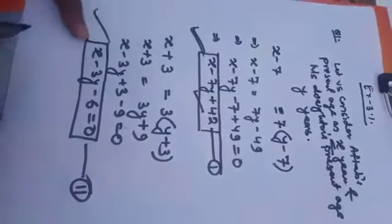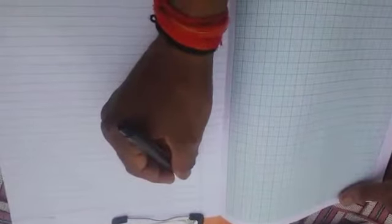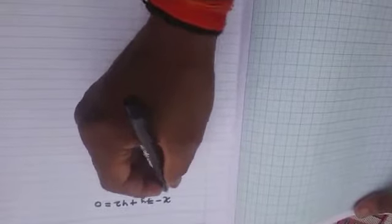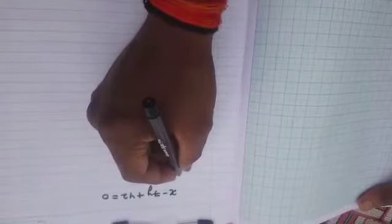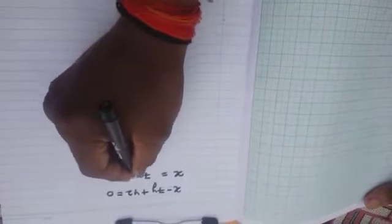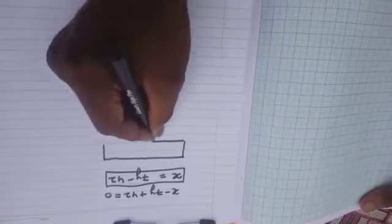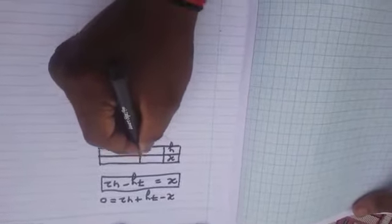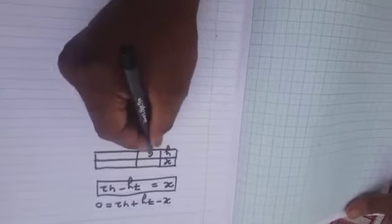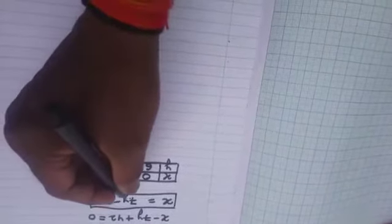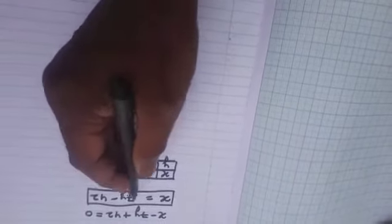Now we are going to represent these two situations graphically. For the first equation X minus 7Y plus 42 = 0, we write X = 7Y minus 42. We plot a table of values: if Y = 6, then X = 7×6 − 42 = 42 − 42 = 0, giving point (0, 6). If Y = 5, then X = 7×5 − 42 = 35 − 42 = −7, giving point (−7, 5). So we have two solutions for the first equation.